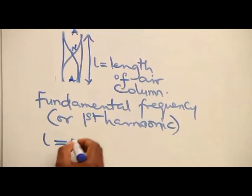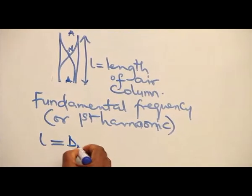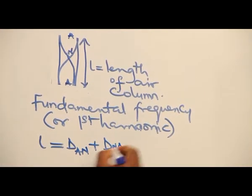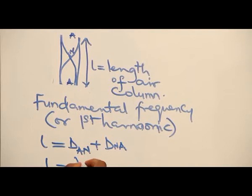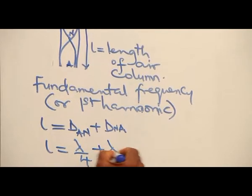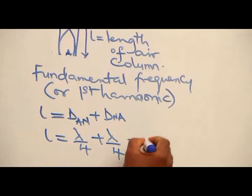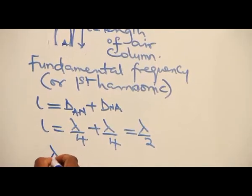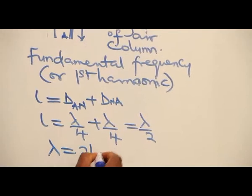So we have distance from antinode to node plus distance from node to antinode. We have wavelength over 4 plus wavelength over 4. This is giving us wavelength over 2. Thus, the wavelength is equal to 2L.